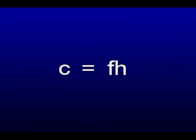The frequency of an electromagnetic wave which provides color is represented by the relationship C equals F times lambda. C is the speed of light, F is the frequency, and lambda is the wavelength.